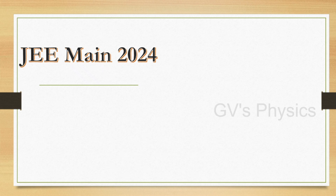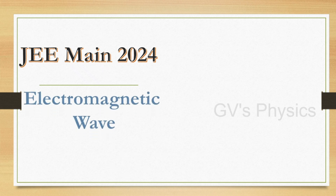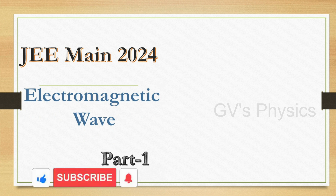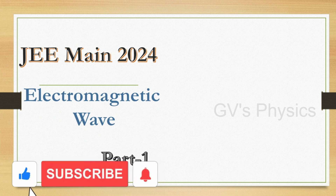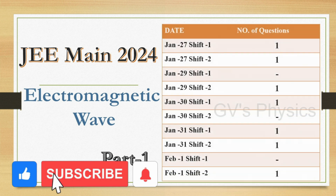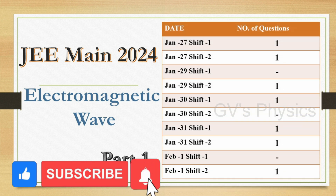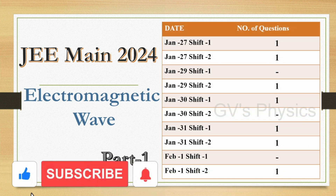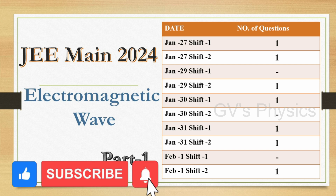Hello students, today we are going to discuss JEE main questions from the electromagnetic wave chapter. It is a very simple and small chapter, so we can score it very easily. These are the number of questions asked in the January paper, attempt 1. We will see the questions now.